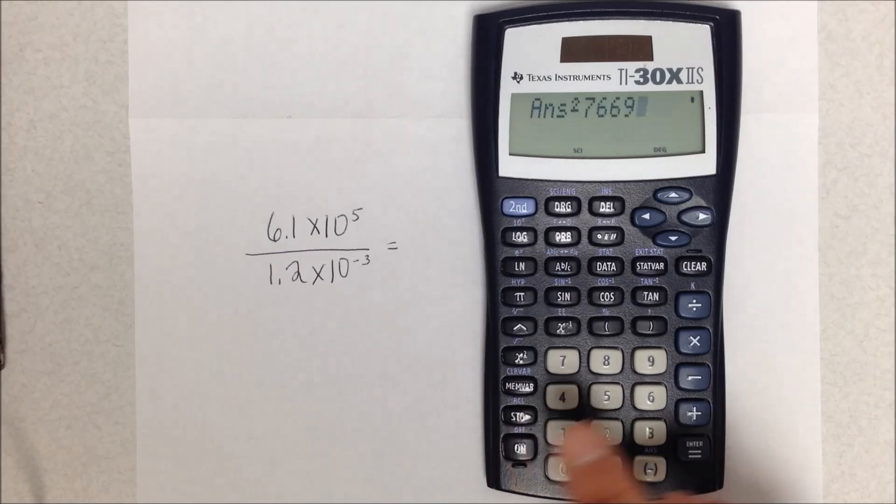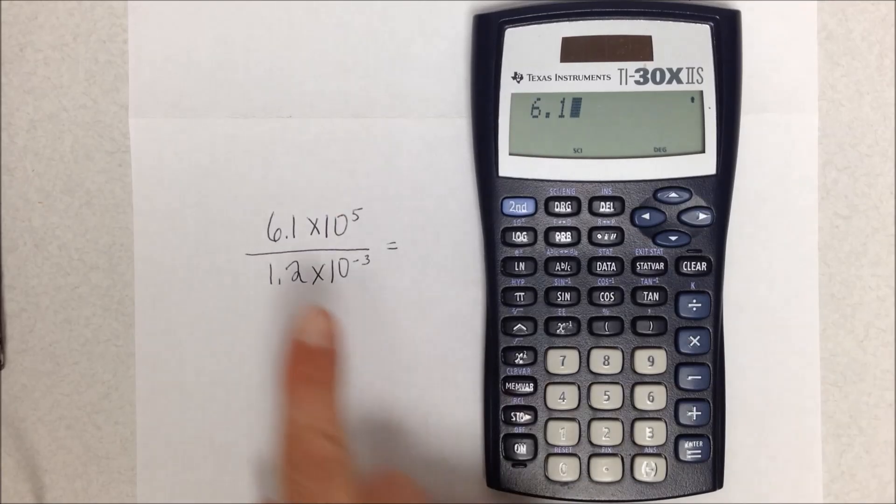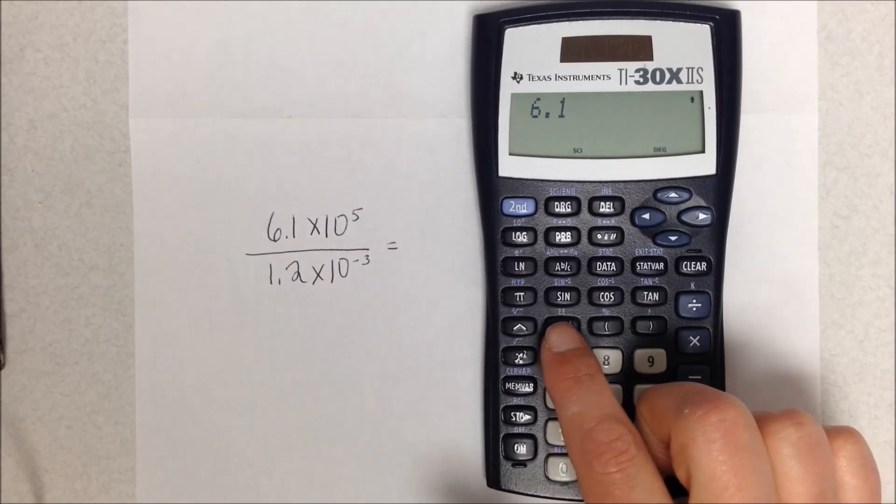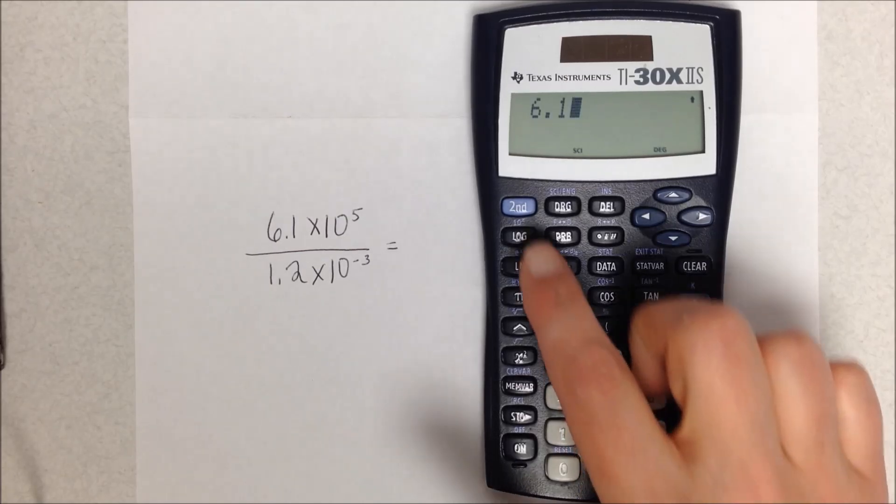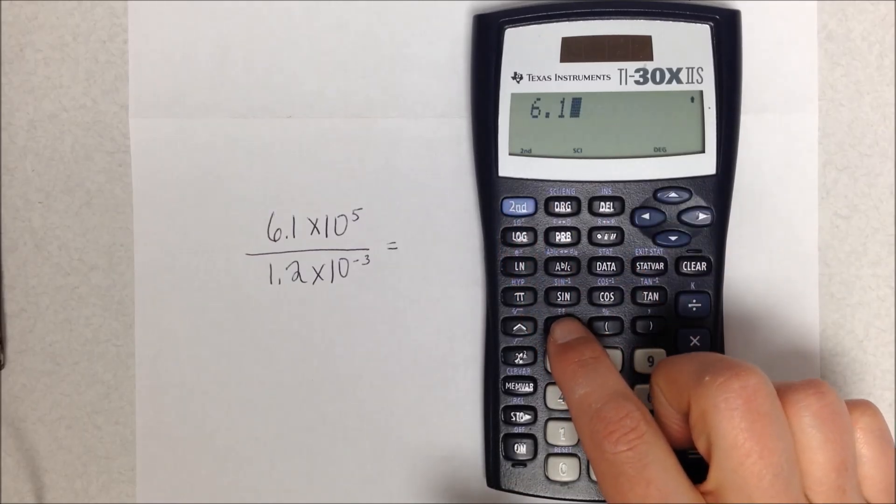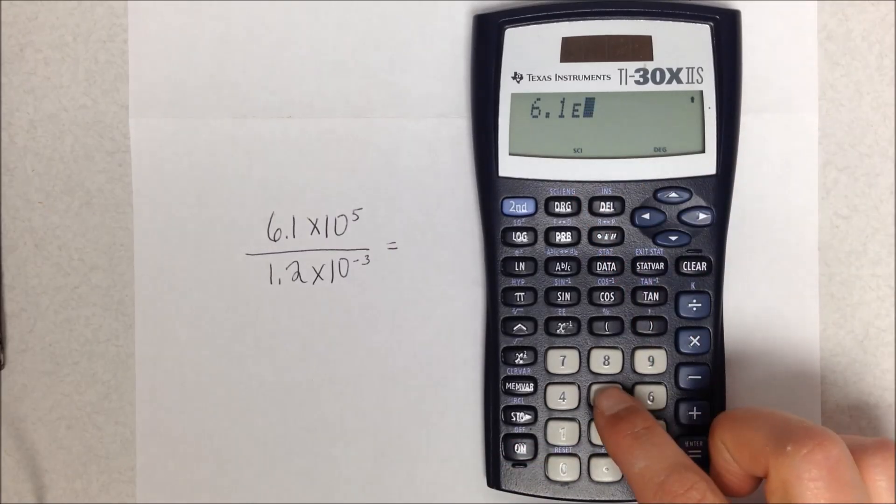So we're going to turn our calculator on, and I'm going to type 6.1. Then I have the times 10 to the fifth, and the way we do this on the calculator is we use this EE function. So if I look here, this button that has x to the minus 1 above it in purple says EE, and that means scientific notation—the exponent. So I'm going to hit second because I want to use the purple function there, and I press EE so it shows an E on my screen, and then I put a 5 in.